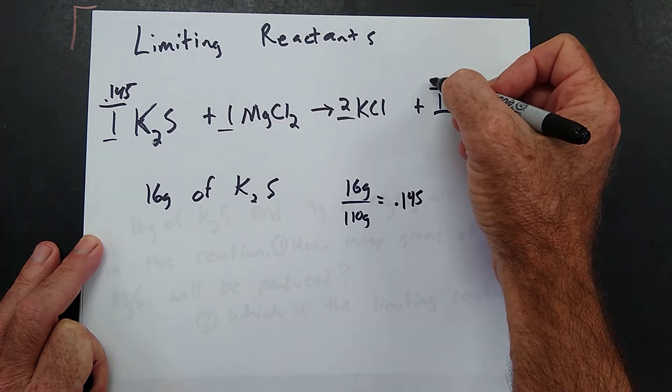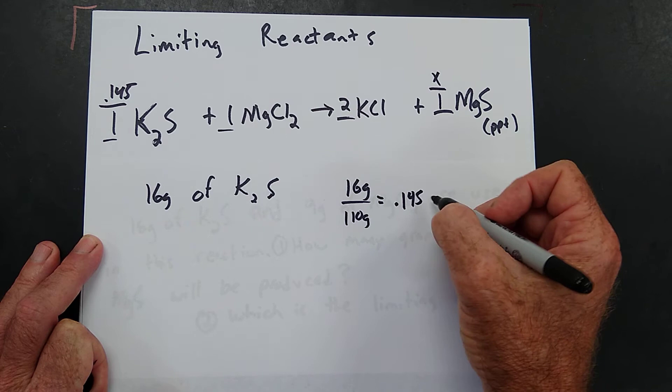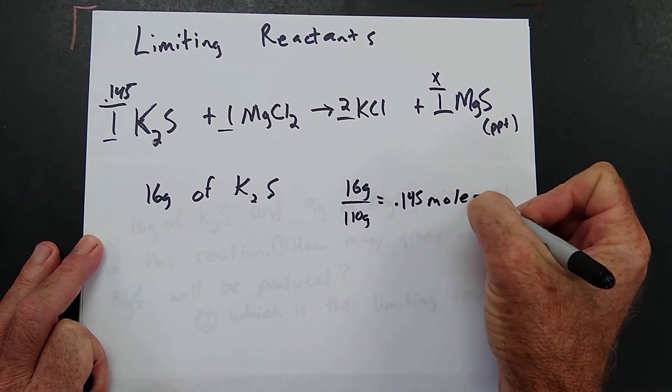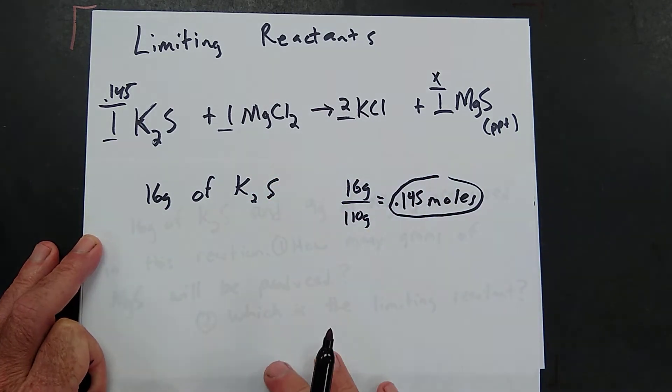16 divided by 110 is going to be 0.145. So 0.145 moles of K₂S would produce 0.145 moles of magnesium sulfide. So we would have 0.145 moles of magnesium sulfide if we use the 16 grams here.